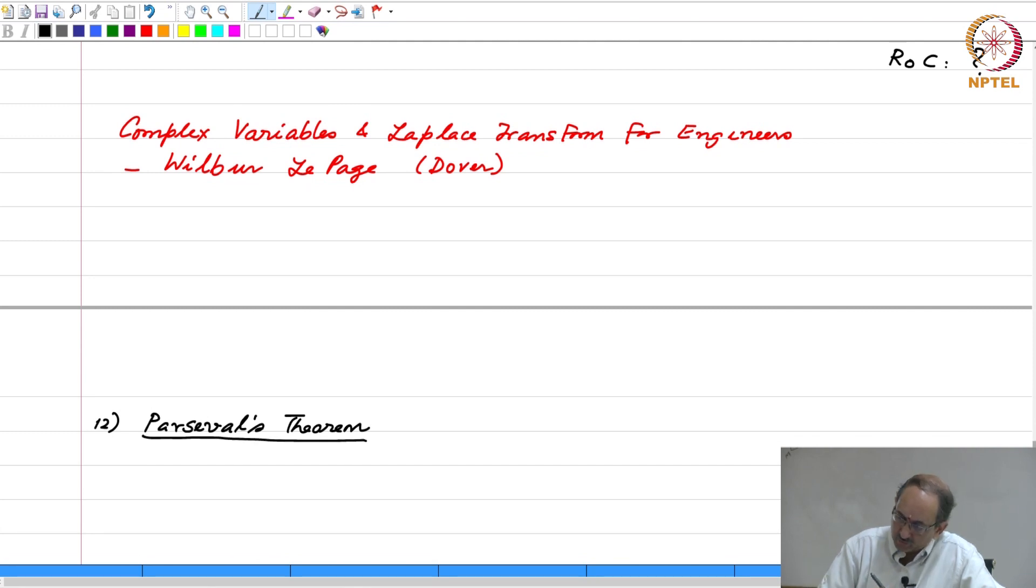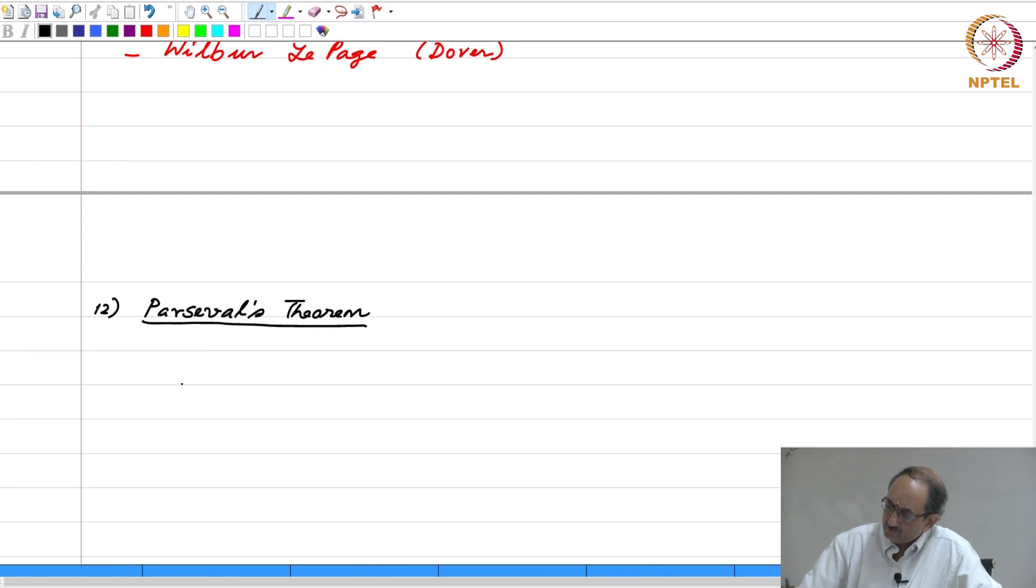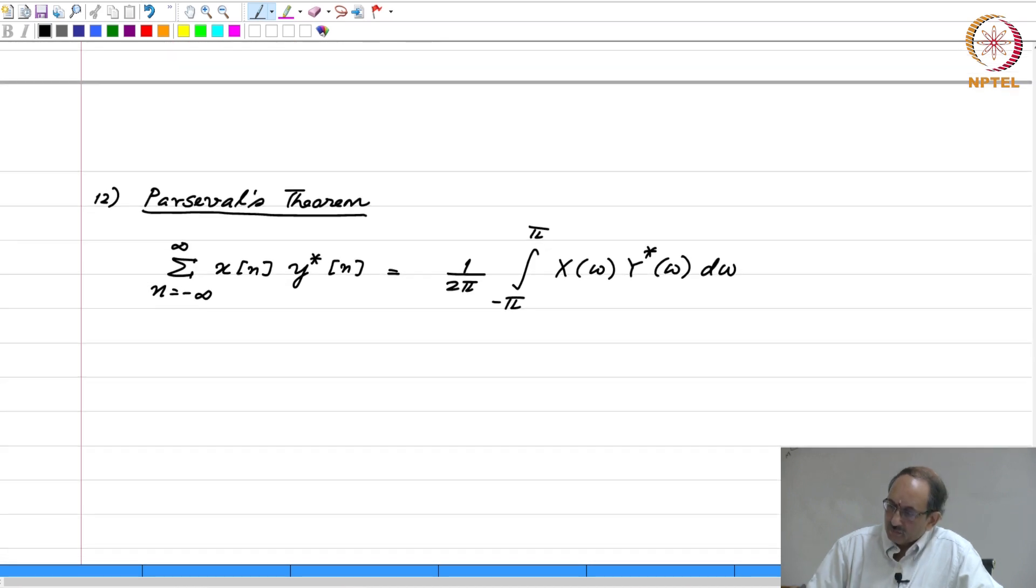The last property is Percival's. So, if we had two sequences, x of n and y of n, then they are related like this.